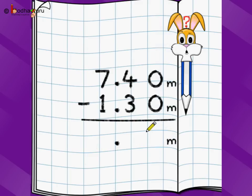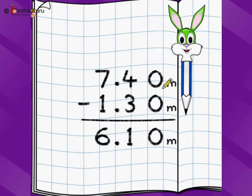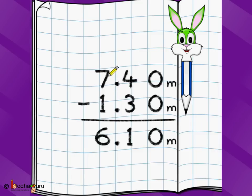Now let's take a problem with decimal. We have replaced the dotted line with an actual decimal point. 7.40 meter minus 1.30 meter — in the answer we also write the decimal point. 0 minus 0 is 0, 4 minus 3 is 1, 7 minus 1 is 6. So the answer is 6.10 meter. Remember, we write the same unit and ensure the decimal point is below decimal point. The two digits after the decimal represent centimeter, so 7.40 meter is 7 meter and 40 centimeter.